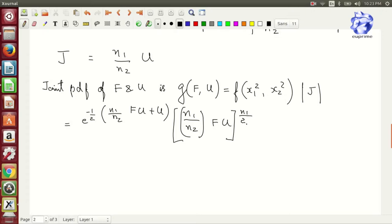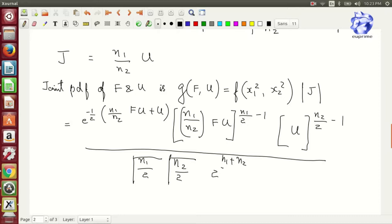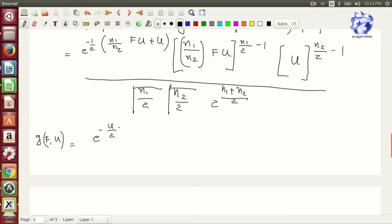So g(F, u) is equal to e to the power minus u by 2, into n1·F by n2 plus 1, into n1 by n2 to the power n1 by 2, to the F to the power n1 by 2 minus 1.